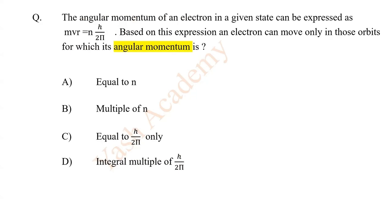The angular momentum of an electron in a given state can be expressed as mvr = n × h / 2π. Based on this expression, an electron can move only in those orbits for which its angular momentum is an integral multiple of h / 2π.